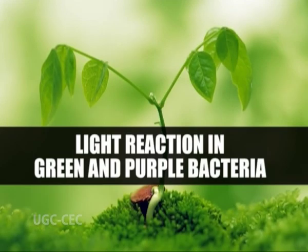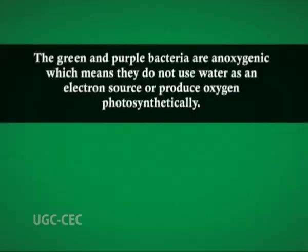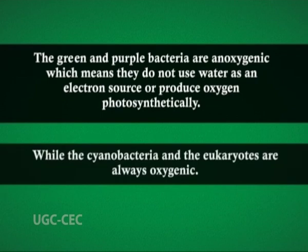Now we come to the light reaction in green and purple bacteria. Green and purple photosynthetic bacteria greatly differ from cyanobacteria and eukaryotic photosynthesizers. The green and purple bacteria are anoxygenic, meaning they do not use water as the electron source or produce oxygen photosynthetically, while cyanobacteria and eukaryotes are always oxygenic. These bacteria possess a pigment known as bacteriochlorophyll with absorption maxima at a longer wavelength. Purple and green bacteria lack Photosystem II and hence cannot use water as the electron donor in the non-cyclic electron transport chain, and without Photosystem II they cannot produce oxygen from water.